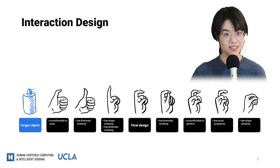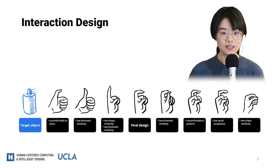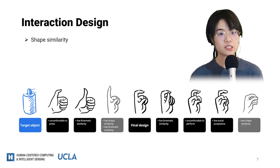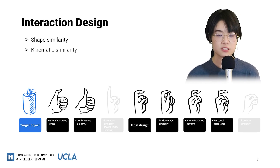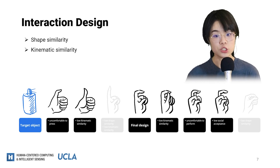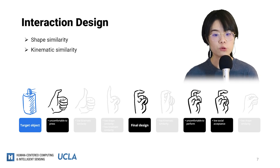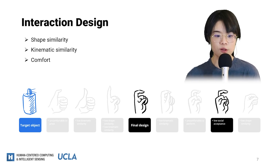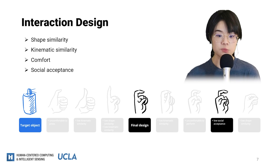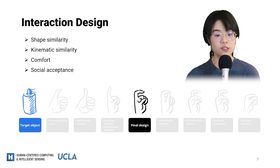Now let me talk about our design process, using the spray can as an example. We first brainstorm many ideas, then apply criteria to select the best one. We consider shape similarity as the first criterion and remove designs not similar in appearance. Then we consider kinematic similarity — good designs should have moving parts that move similarly to the target objects. We also removed designs that were uncomfortable to perform. Finally, we consider social acceptance, meaning good designs must be socially acceptable. Following these criteria, we arrived at our final design for the spray can.